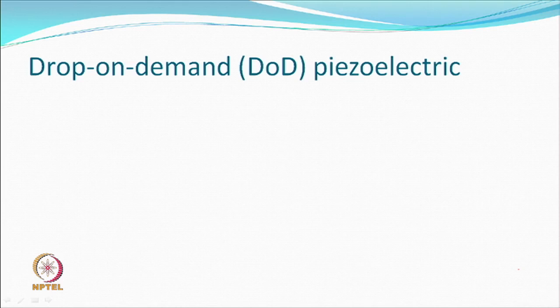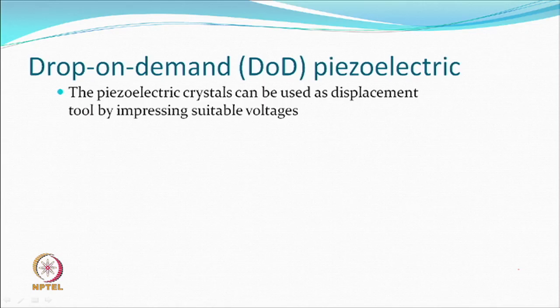In piezoelectric-based inkjet printers, which are also drop-on-demand type, once we know that a particular sensor is going to displace by a certain amount, we can design the system accordingly. The piezoelectric crystals can be used as a displacement tool by impressing suitable voltage. The displacement could be in any direction — X, Y, or Z — depending upon what has been done with the crystal.